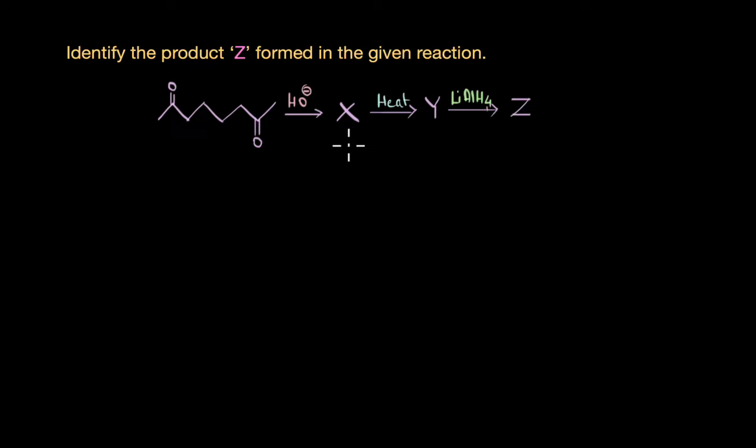In this video we are going to solve a question on aldol cyclization. We need to identify the product Z that is formed at the end of the reaction. Here we have a diketone as the starting material which is treated with a base, then heated, and then reduced using lithium aluminium hydride to form the final product Z.